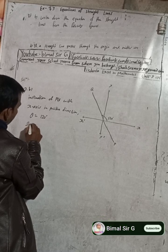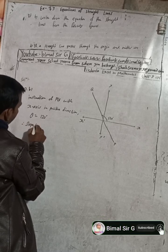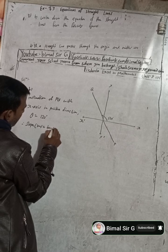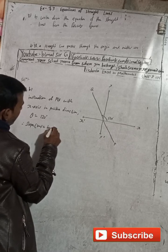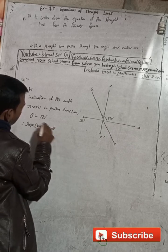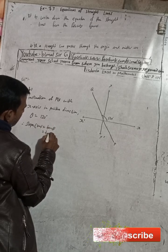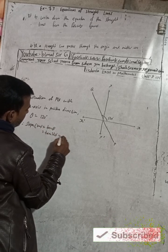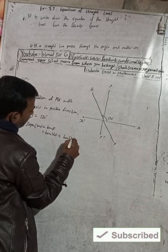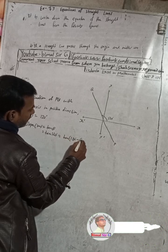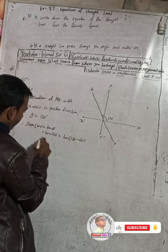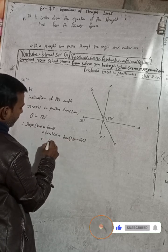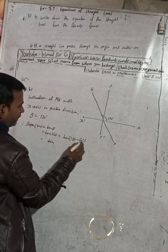Therefore, slope is indicated by M = tan(theta) = tan(120°). We can write tan(120°) as tan(180° - 60°). For tan(180° - 60°), tan remains tan and the angle is 60 degrees.